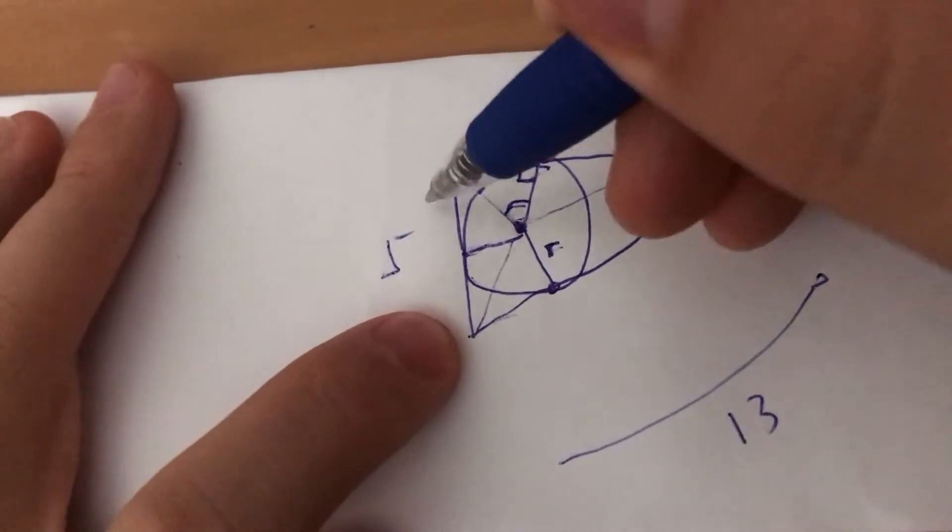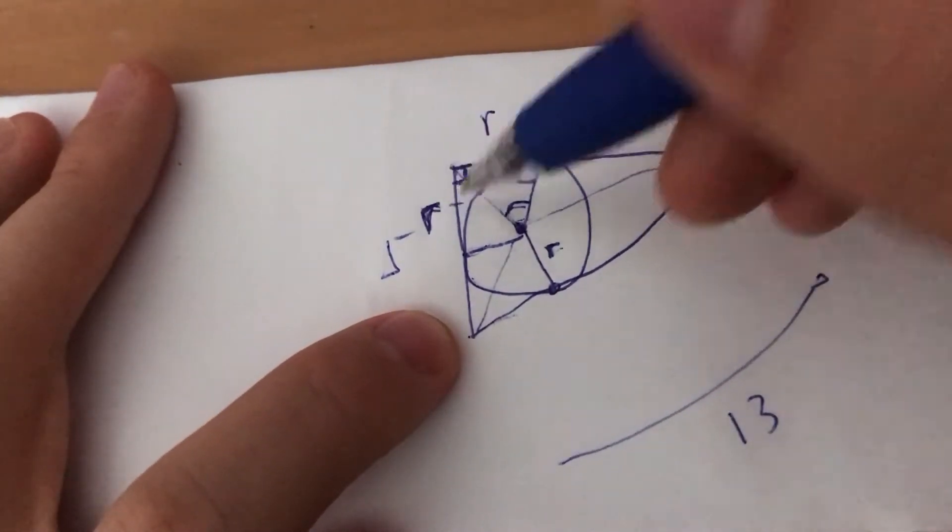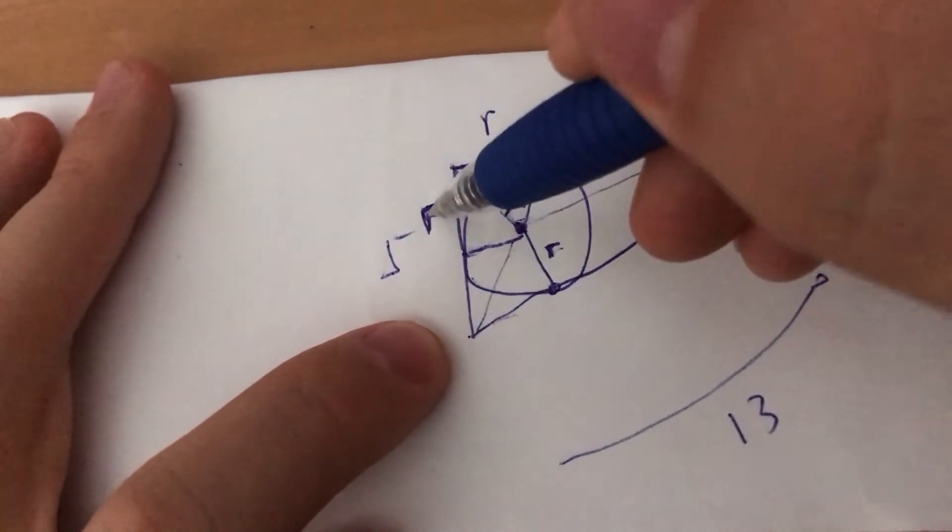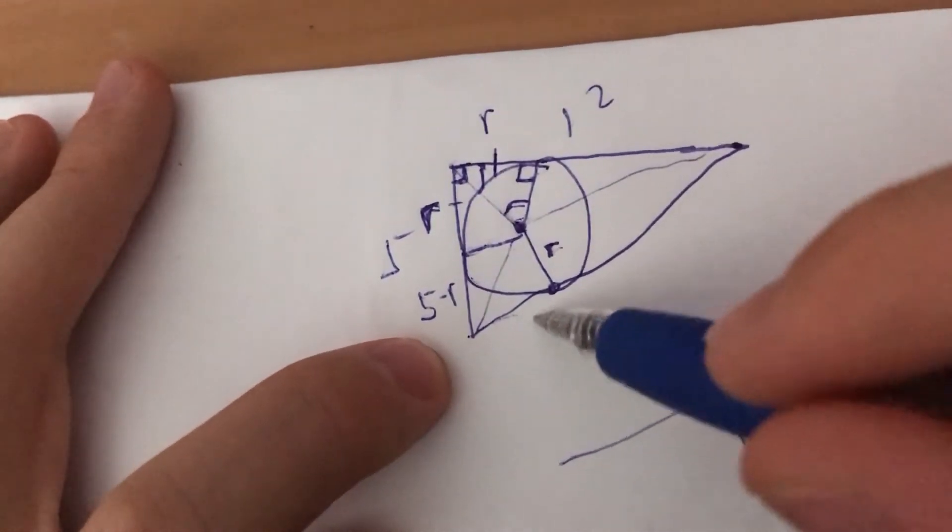That's also R. And this is R, because these are equal. Which makes this 5 minus R. These are equal, so this makes this 5 minus R.